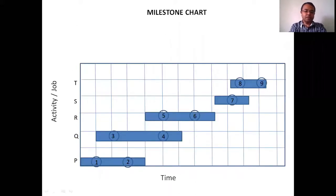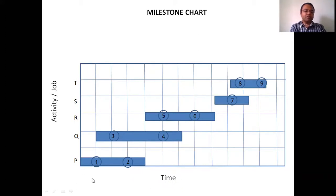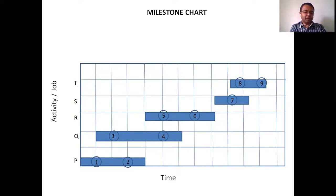For example, for the P activity requiring a total of 4 days, we divide those 4 days into 2 parts. To complete the second task, you must first complete the first task — then only you can go for the second task. So the total activity is subdivided into 2 parts and we provide one milestone for that.